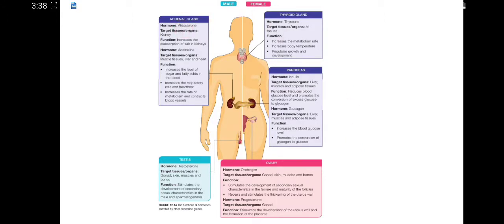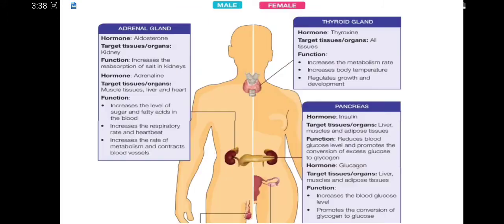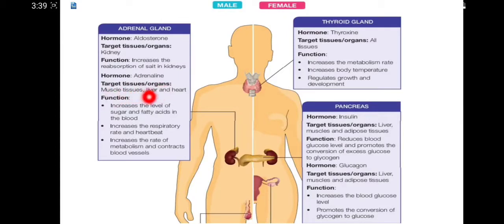The adrenal gland secretes aldosterone, which targets the kidney, and its function is to increase the reabsorption of salt in the kidneys. It also secretes adrenaline, which targets muscle tissue, liver, and heart. The functions of adrenaline are to increase the level of sugar and fatty acids in the blood, increase the respiratory rate and heartbeat, increase the rate of metabolism, and contract blood vessels.